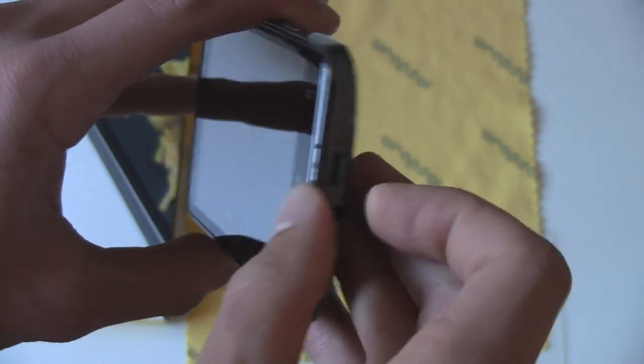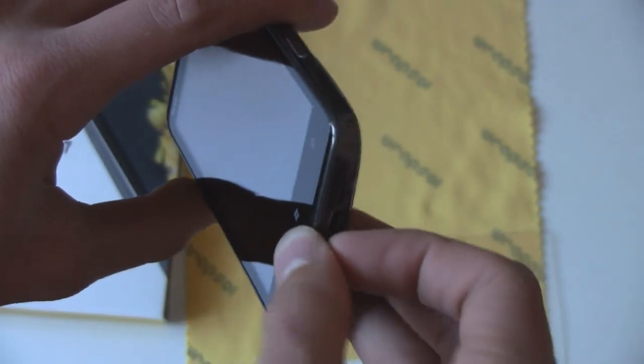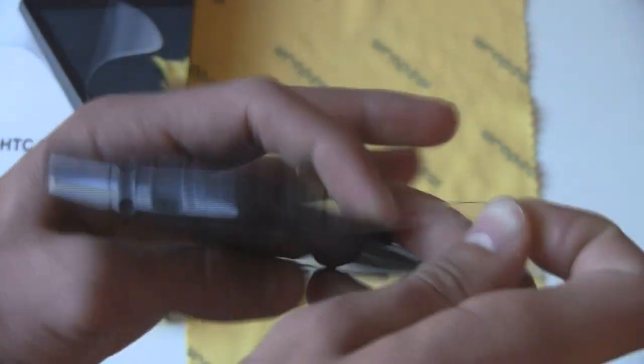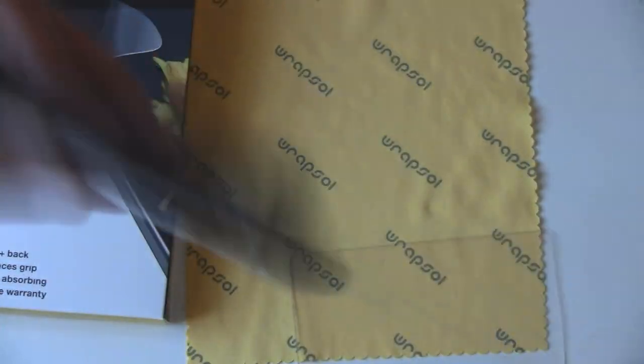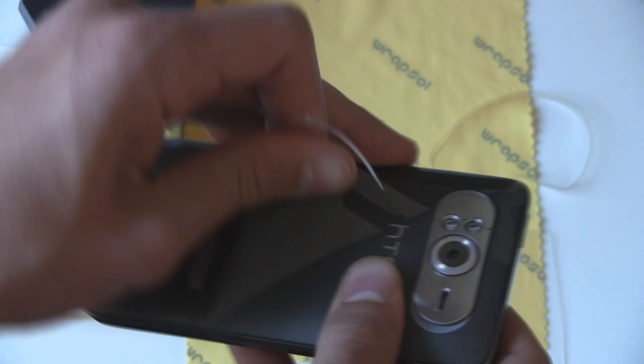Same thing for all the side covers here. Just grab one of the corners with your fingernail and just start to pull it off. So, it comes off really easily, and then you're left with your really nice and super clean device underneath.